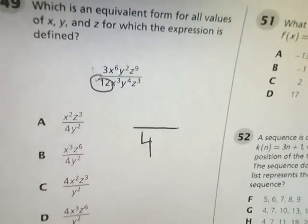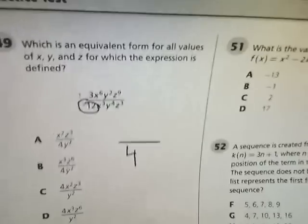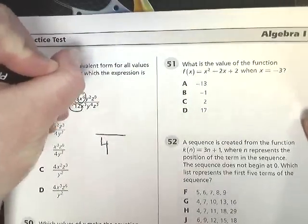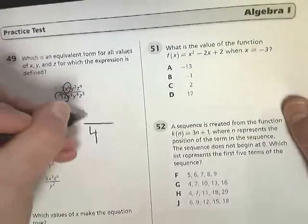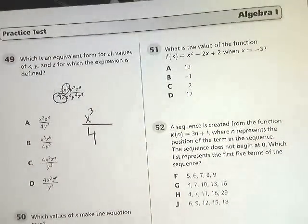Then I'm going to look at my x's. x to the sixth versus x to the third. Well, x to the sixth is bigger, so I know my x term is going to go on top. And I subtract 6 minus 3. So it's x to the third power because 6 minus 3 is 3.